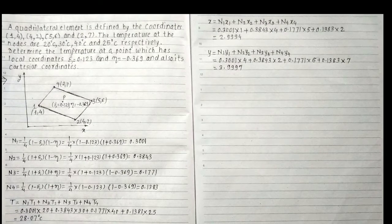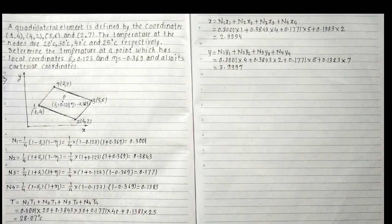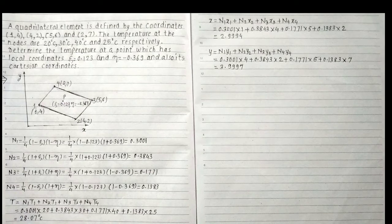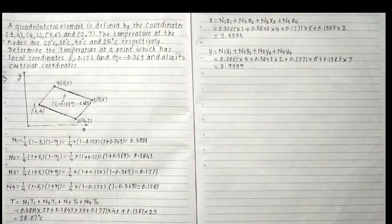Now let's calculate N2. N2 is equal to (1/4)(1 + zeta)(1 - eta), which equals (1/4)(1 + 0.123)(1 - (-0.369)) = (1/4)(1.123)(1.369). So N2 is equal to 0.3843... wait, N2 equals 0.3843.